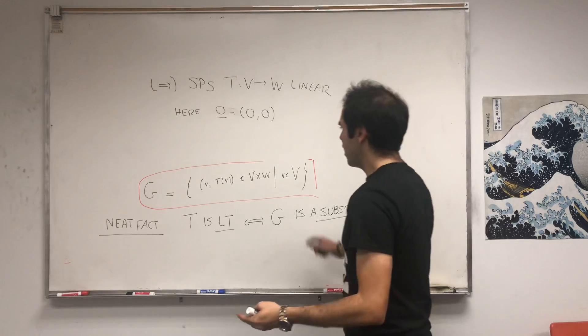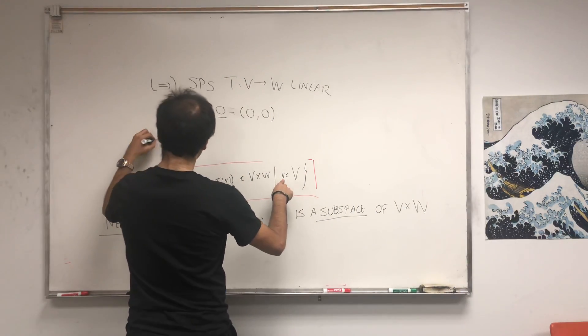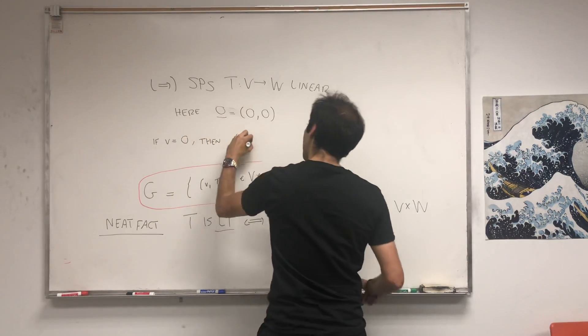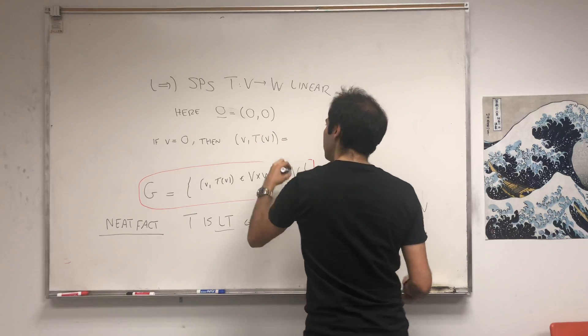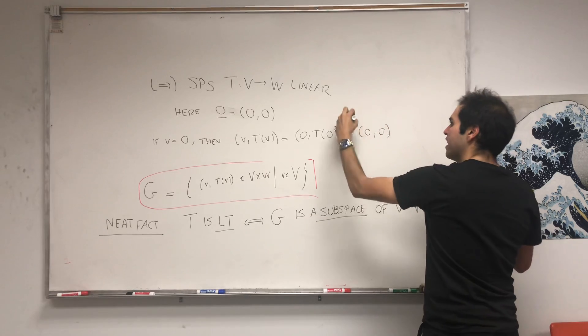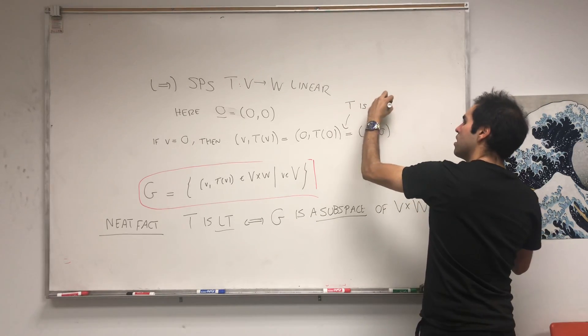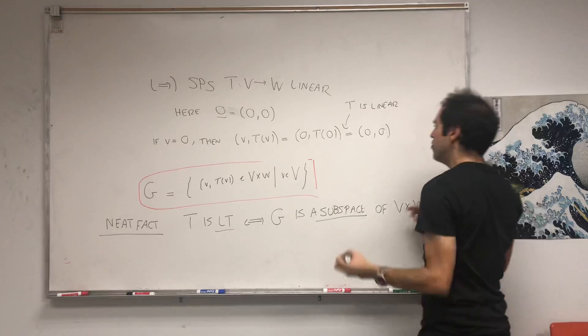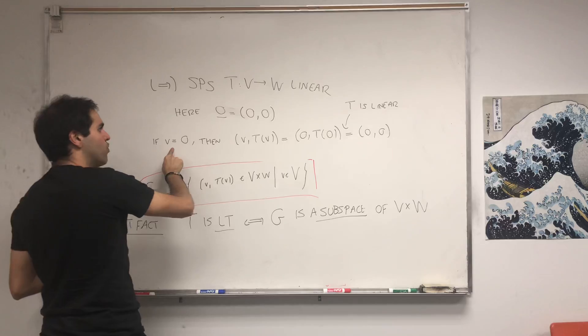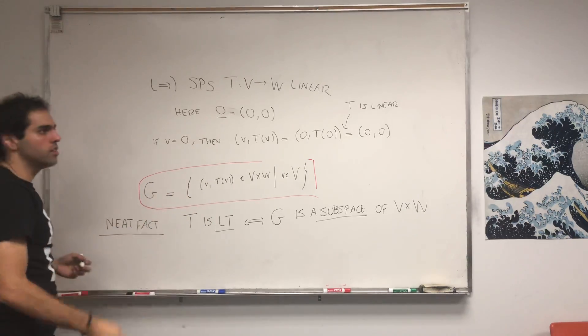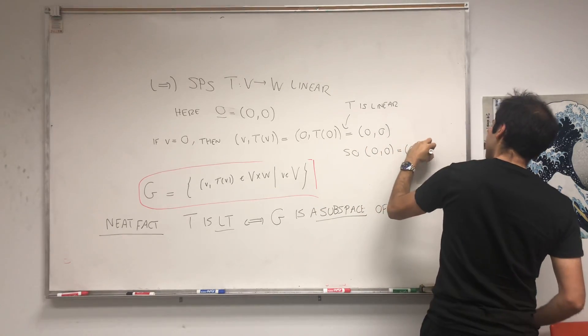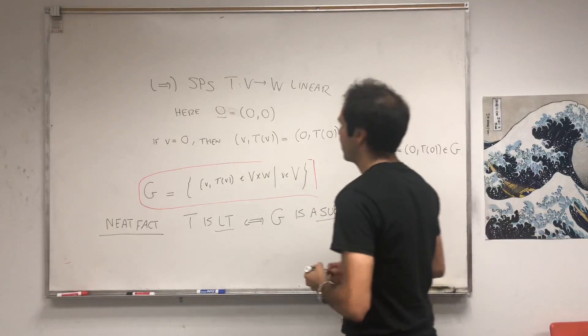what is (v, T(v))? Well, that is (0, T(0)), and that's (0,0). That's because T is linear. Which means, going back, (0,0) is of the form (v, T(v)) for v equals zero. So zero is on the graph. So (0,0), which is (0, T(0)), is in the graph. That's one thing.